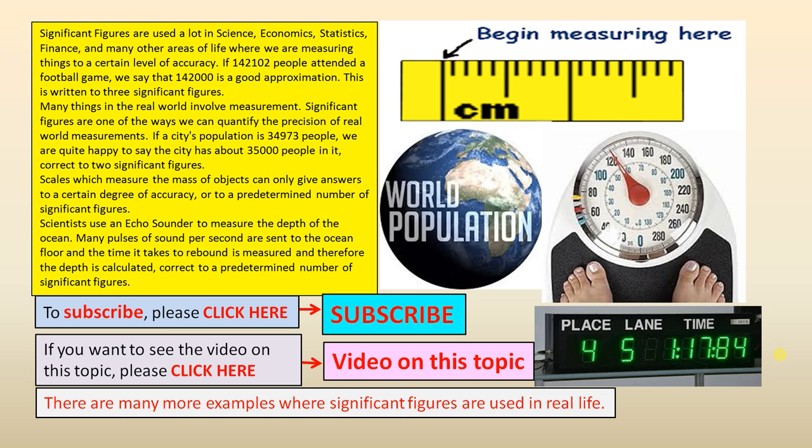Significant figures are used a lot in science, economics, statistics, finance, and many other areas of life where we are measuring things to a certain level of accuracy. If 142,102 people attended a football game, we say that 142,000 is a good approximation. This is written to three significant figures.